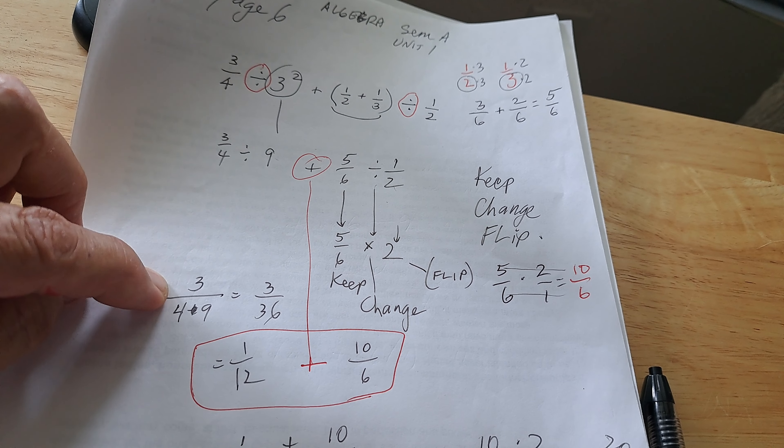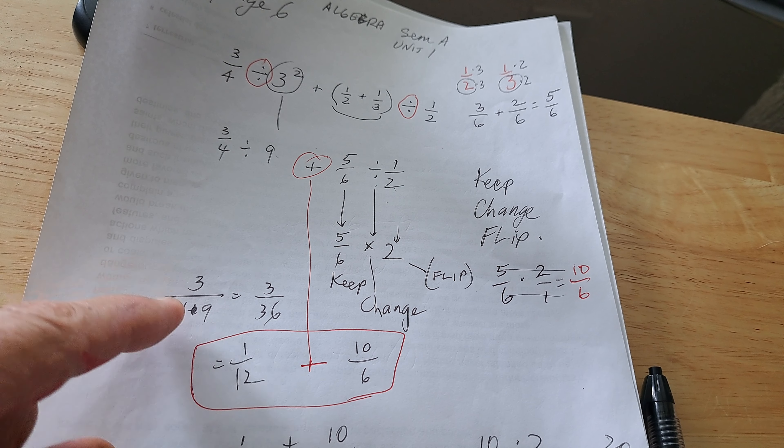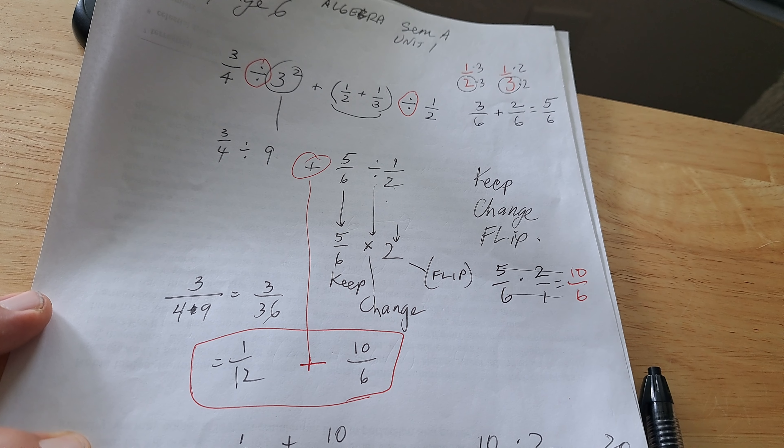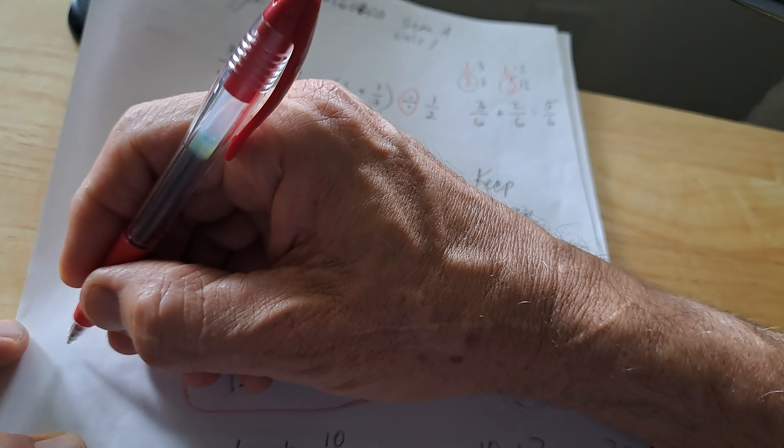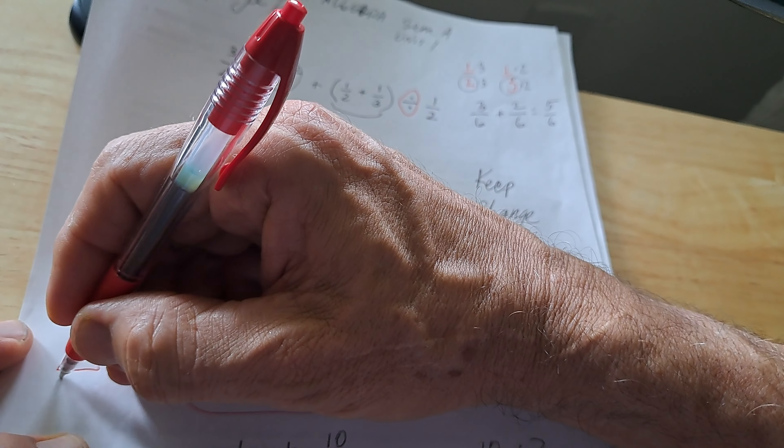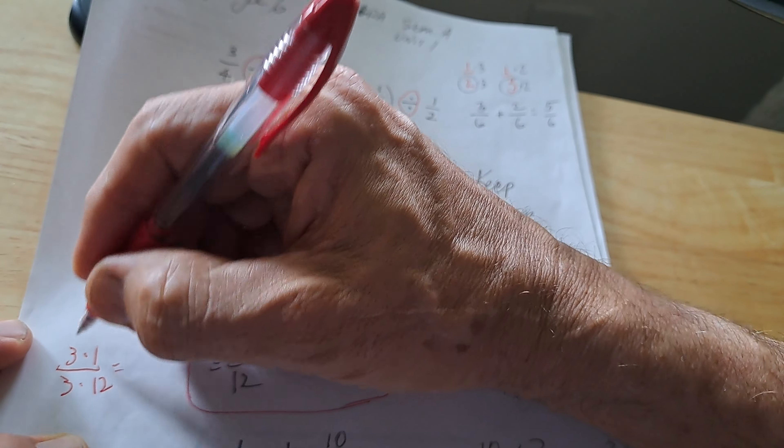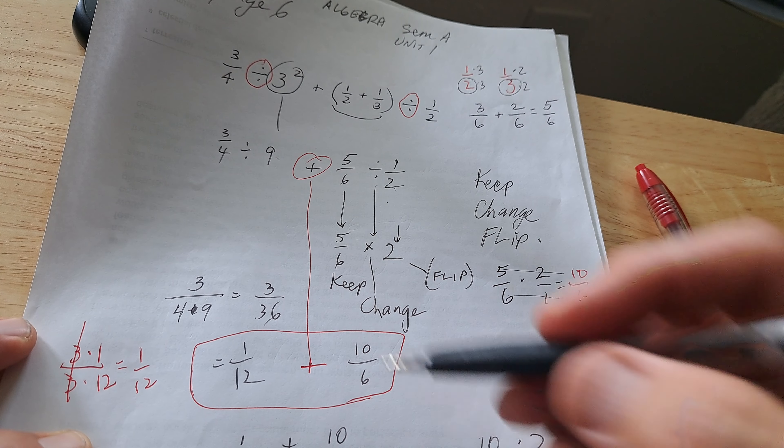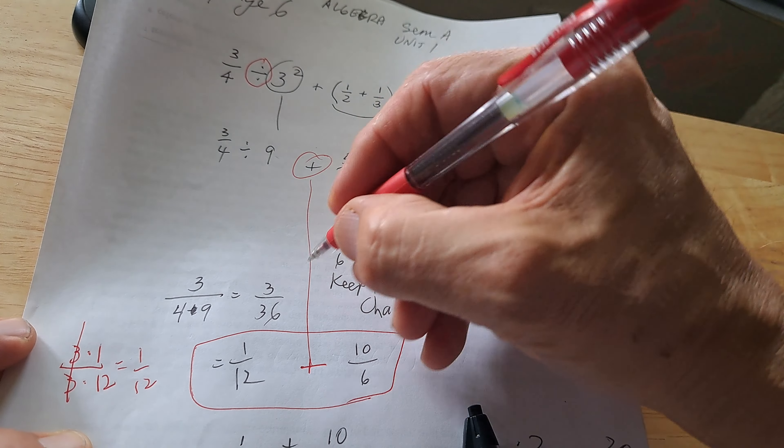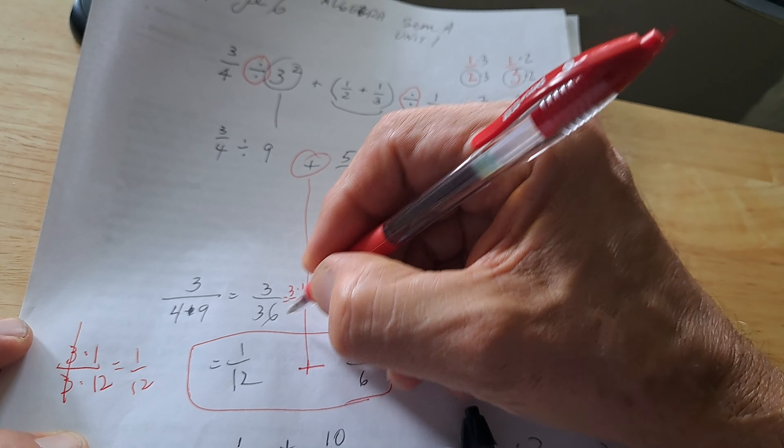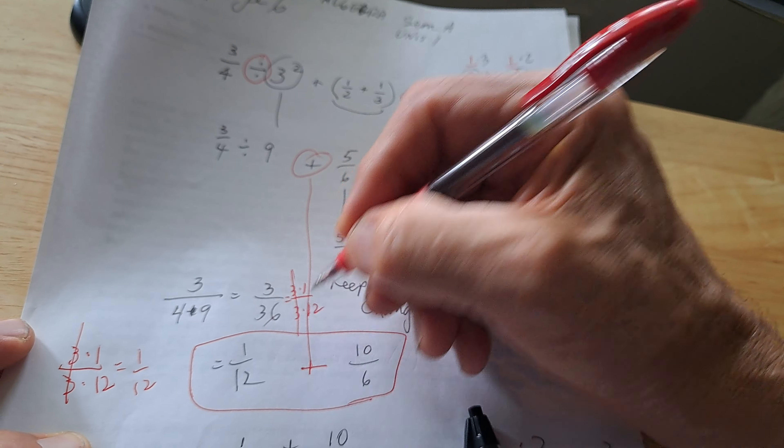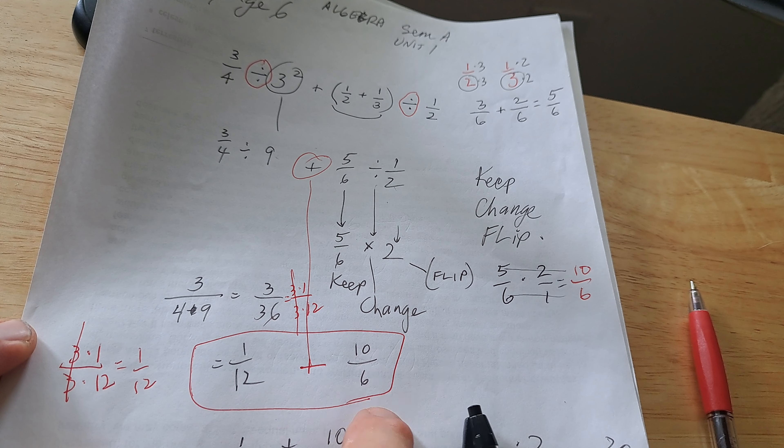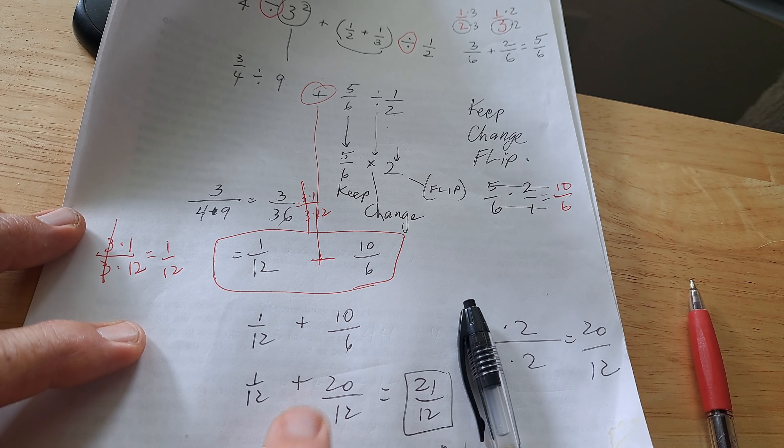Now that plus comes down, and this strange thing where we do 3 quarters divided by 9, we put the 9 underneath. So we got 3 out of 36. Now again, this is silly math teacher, right? 3 times 1 and 3 times 12. The reason we see this is because this 3 is like 3 times 1, and this one is 3 times 12. That's how we got rid of it. It becomes 1/12.